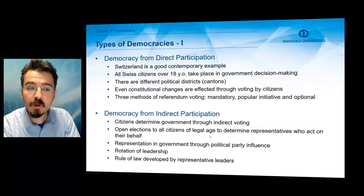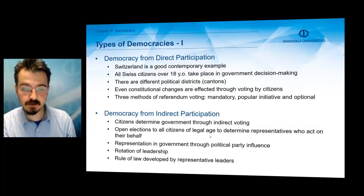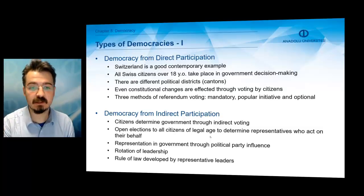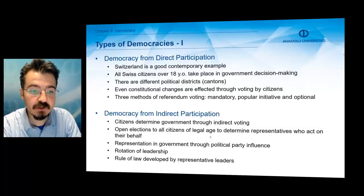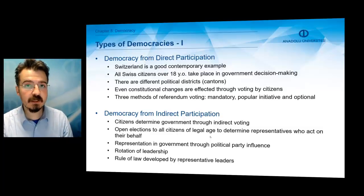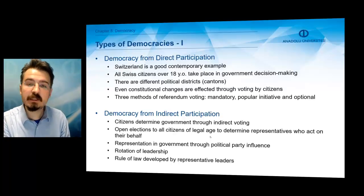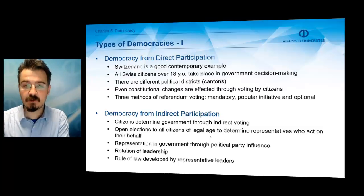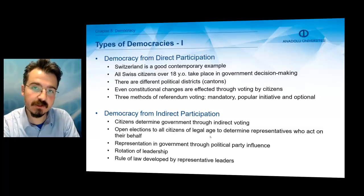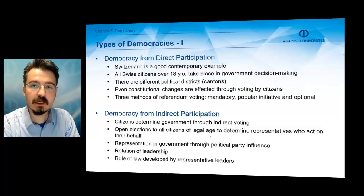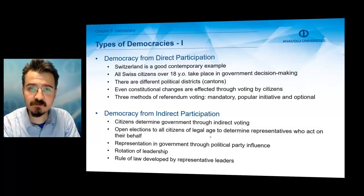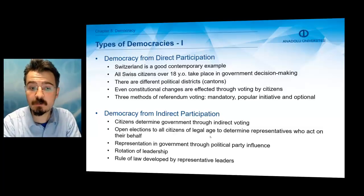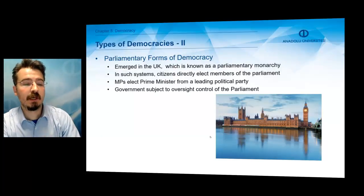In indirect democracy, citizens elect representatives who act on their behalf. Ordinary citizens vote and elect their representatives, and those representatives decide on their behalf. A third characteristic is representation in government through political party influence, so political parties represent ordinary people in government and decide on behalf of citizens. There is also a rotation of leadership, so leadership in indirect democracy can transfer from one political party to another, and these countries develop the idea of rule of law developed by representative leaders.